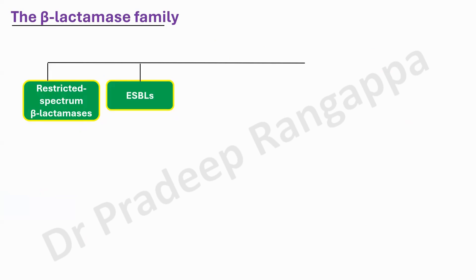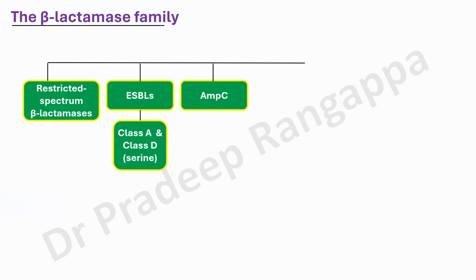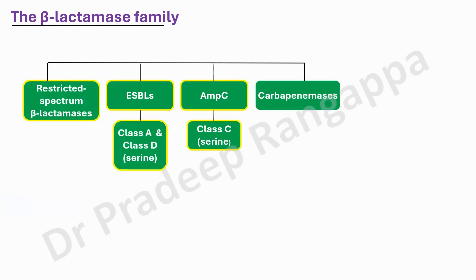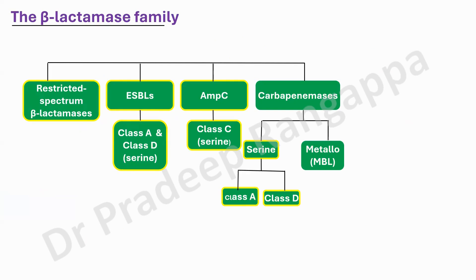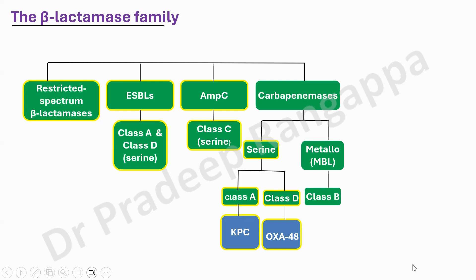All of us should have clarity on Ambler's classification: OSBLs are ordinary spectrum beta-lactamases; ESBLs have serine — Class A and D categories; AmpC belongs to Class C; and carbapenemases are again divided into serine and MBLs. Serine is always Class A and D; AmpC is only C. In carbapenemases, Class A is KPC, Class D is OXA-48, and Class B (MBLs) includes NDM, VIM, and IMP.